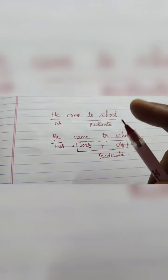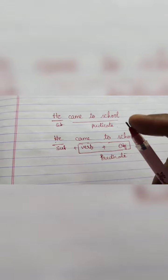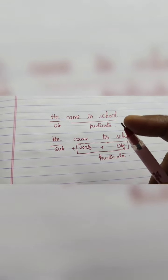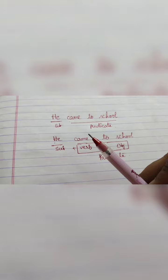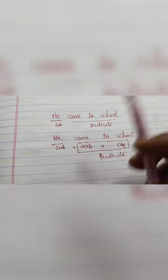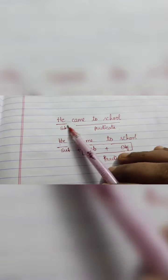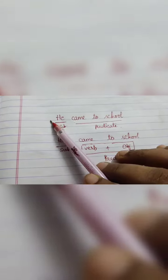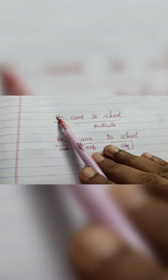The rest of the pen can be called the predicate. So the subject is the one who does the action, and apart from the subject, the remaining part of the sentence is called predicate.